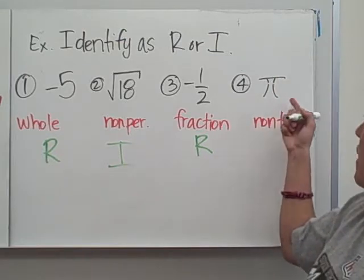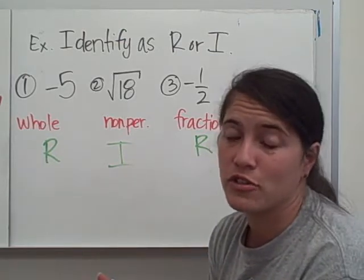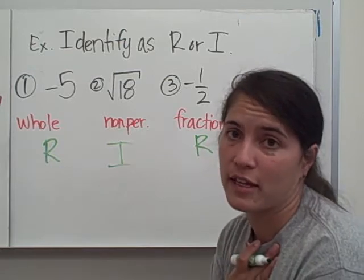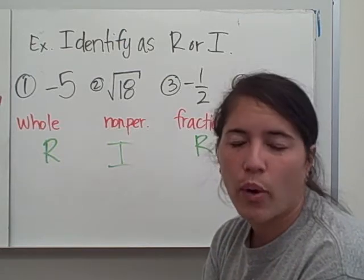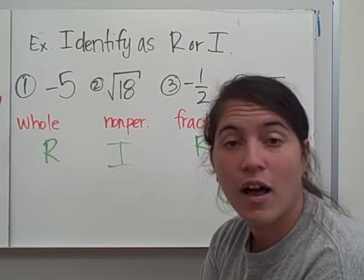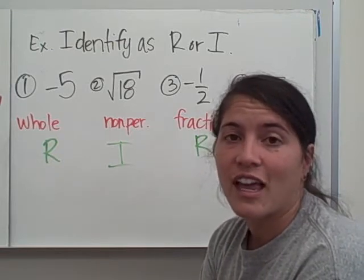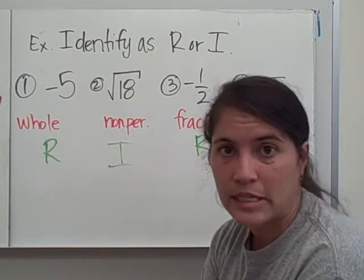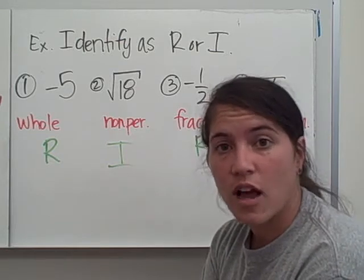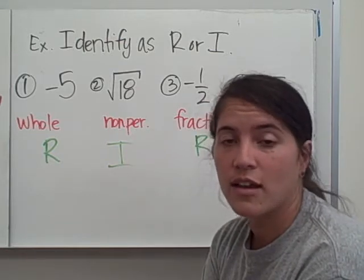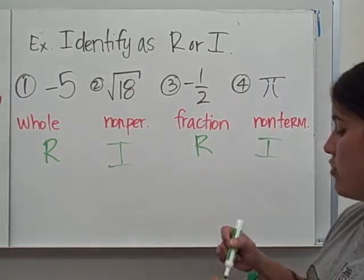The last example is pi. I'm sure your teachers have talked to you about pi — we haven't discussed it yet because we haven't done circles. But pi is 3.14 and goes on forever. It is non-ending and does not repeat, so it's a non-terminating and non-repeating decimal, which makes it irrational.